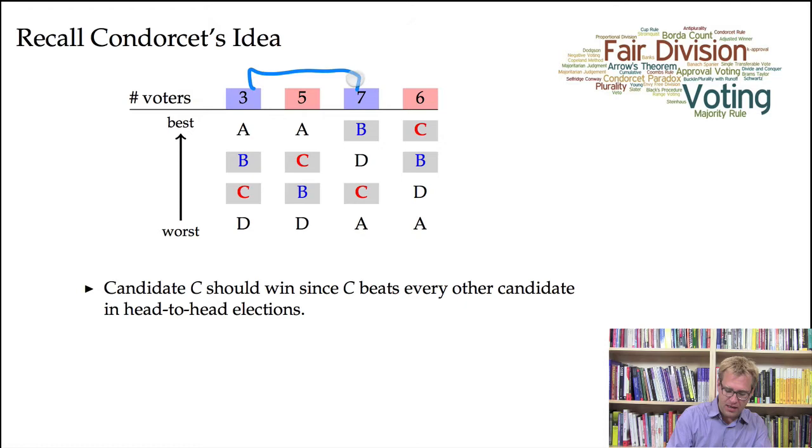Versus B, candidate B gets 10 votes, so 10 people rank B above C, while 11 people rank C above B.